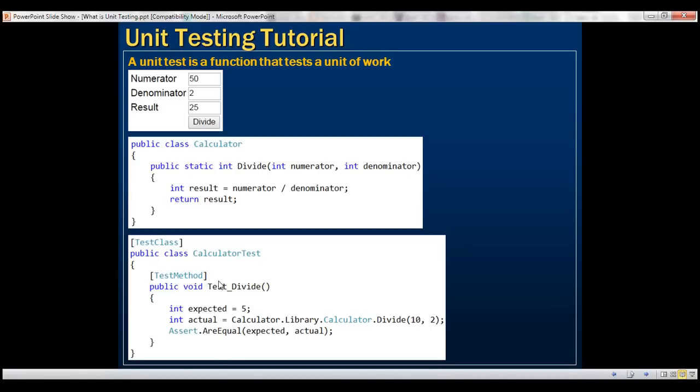If you compare this unit test function with this function right here, there is another difference, and that difference is we have decorated this unit test function with test method attribute. So the obvious question that comes to our mind at this point is: what is test method attribute? We'll discuss in detail about this attribute in a later video. For now understand that if you decorate a function with test method attribute, then that function is a test function which is testing some unit of work in your application.